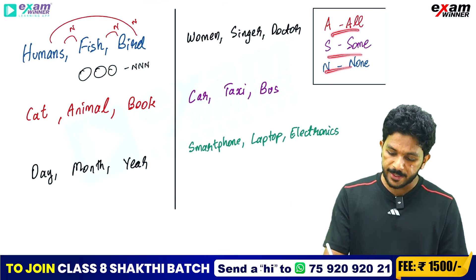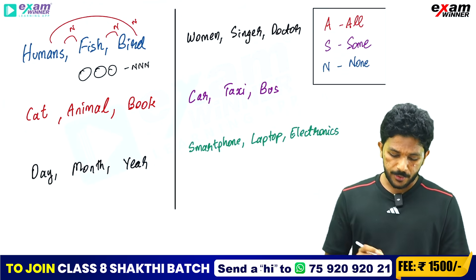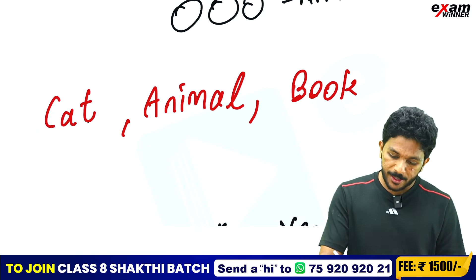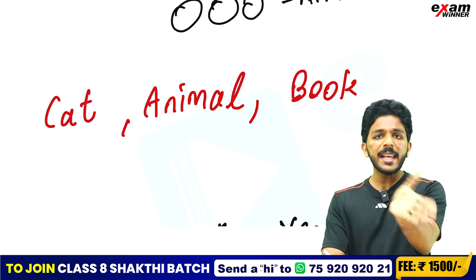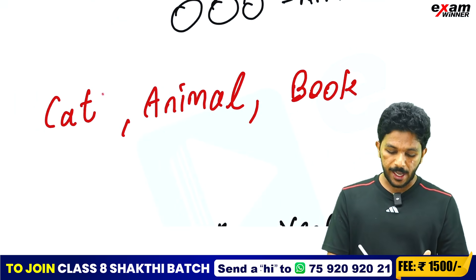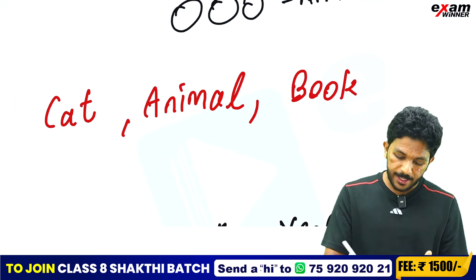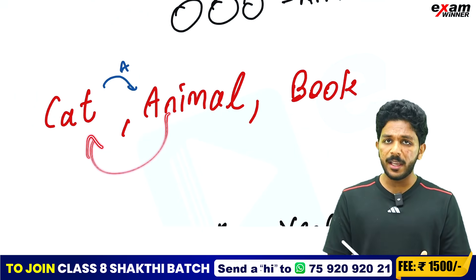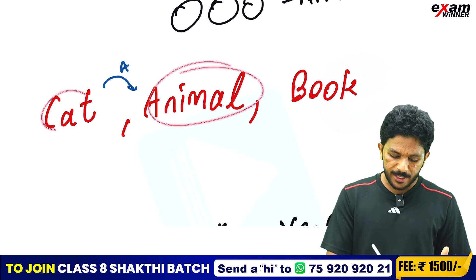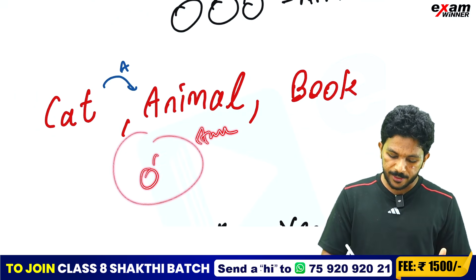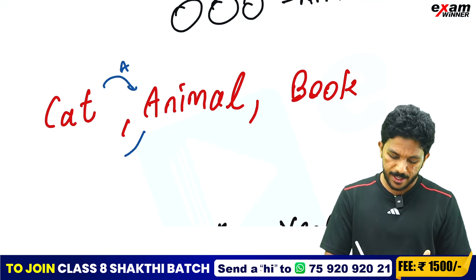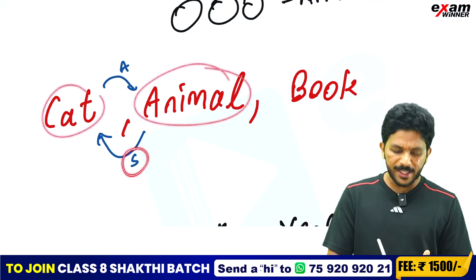Now: Cat, Animal, Book. Using ASN — what is the relationship? Every cat is an animal. If we come to Cat — all cats are animals. Some animals are cats. Now, are animals books? No. Are cats books? No.